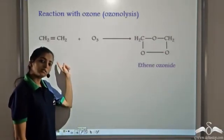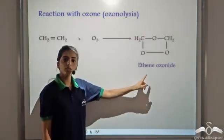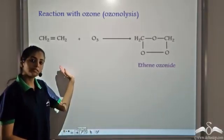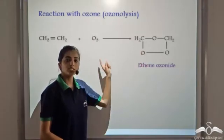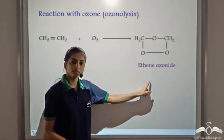In this case we have used ethene, so we get the ethene ozonide. The reaction of alkenes with ozone gives us such a product. For ethene, we get the ethene ozonide.